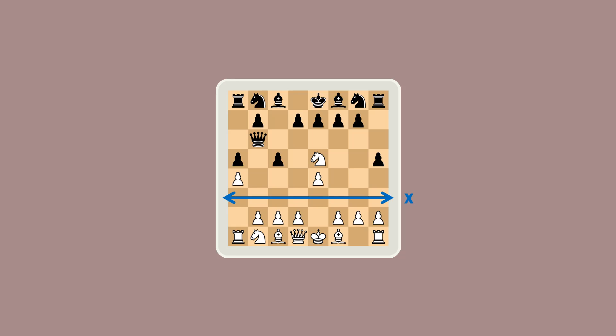There's side to side, or the X dimension, and there's up and down, or the Y dimension. Technically, there's also a third dimension of height, but it is not used in chess.